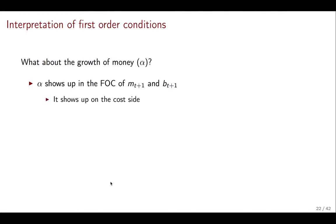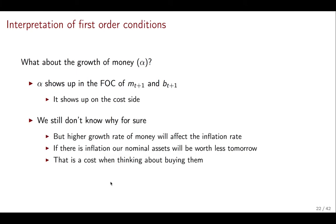Finally, we should be thinking about how to get the money growth rate into this interpretation. Well, if you notice, α is going to show up in the first order conditions of MT and BT+1. These are both nominal variables. And not only that, it's showing up on the cost side. So how should we think about that? Well, we're still not sure. We're going to figure it out for sure. But right now, we don't know. But here is some intuition. Higher growth rate of money will for sure affect inflation rate. We don't know exactly how, but it will have an effect on the inflation rate. If there is inflation, then our nominal assets will be worth less tomorrow. And that is a cost when thinking about buying them. Because in order to get the same payoff in the future, you need to accumulate more assets the more inflation there is. That's the same thing as saying they are worth less tomorrow. That in order to get the same value, you need to accumulate more of them. So it's more costly to get the same value tomorrow. And that is why the α is showing up there.